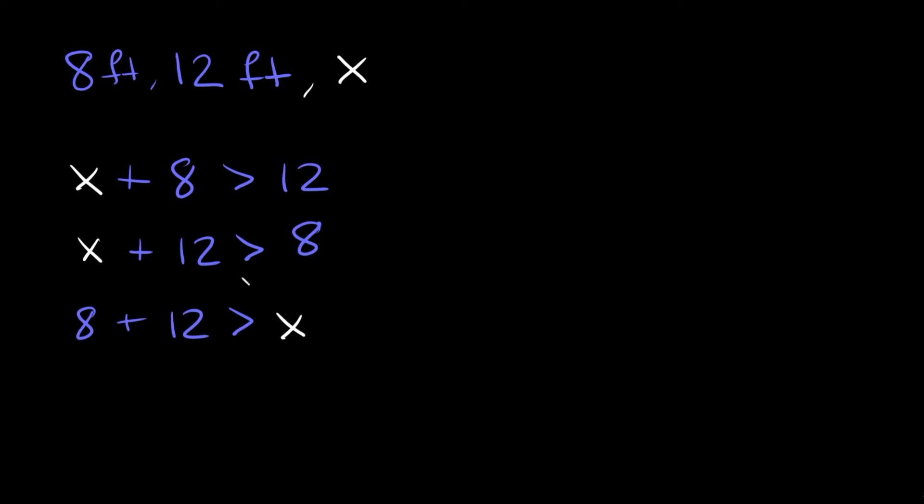Okay, so now here we're just going to solve for x in each inequality. So starting with this first one up here, solving for x we can get rid of this 8 by subtracting 8 from both sides. Those cancel out. So then here we just get that x is greater than 12 minus 8 which is 4. Okay, now for this one over here to solve for x, let's get rid of this 12 by subtracting 12 from both sides. Those cancel out. So then here we get that x is greater than 8 minus 12 which is negative 4.